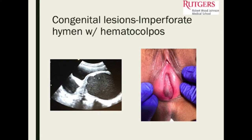You can see the bluish bulge at the introitus. We took her to the operating room, opened the hymen and sutured it open. Lots of accumulated blood came out. We then followed her over time after surgically correcting the problem. Months had gone by before this patient was correctly diagnosed.